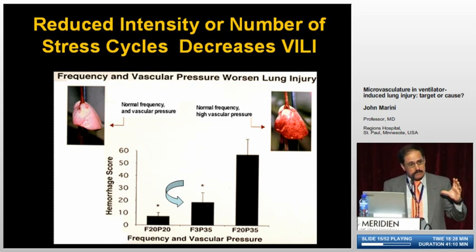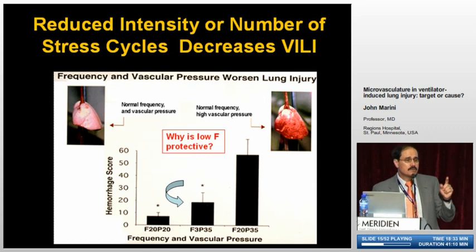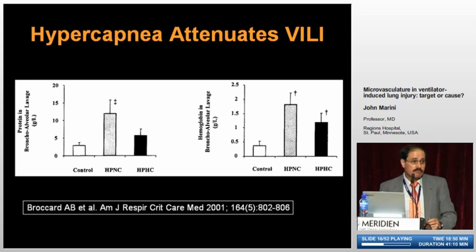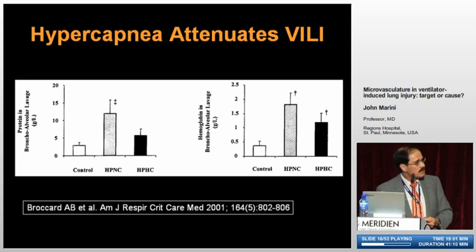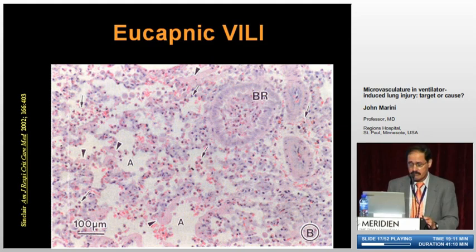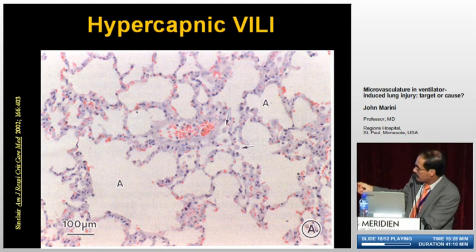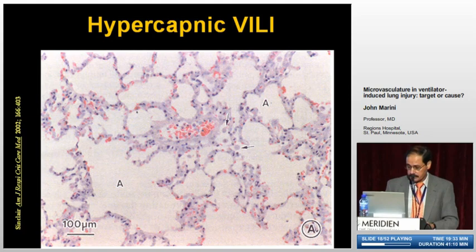Why is lower frequency protective? One possibility is hypercapnia could attenuate inflammation. But this is essentially a cell-free system. Hypercapnia tends to attenuate ventilator-induced lung injury — that was shown by Alain Brocard and also by Mark Sinclair, who showed that acute hypercapnia and acidosis has a suppressive effect on inflammation. So one possibility is that lower ventilation frequency protected the lung because of hypercapnia.